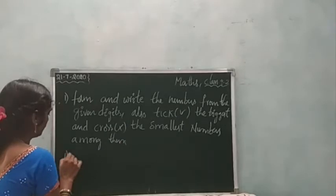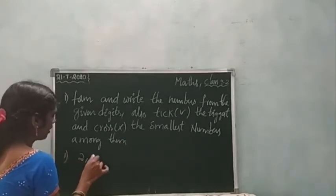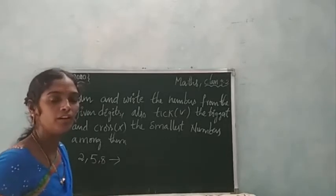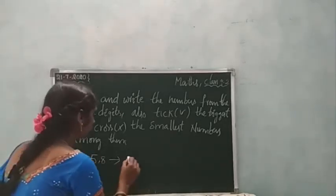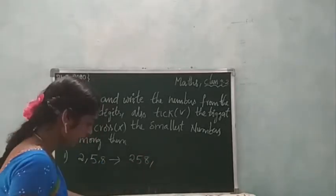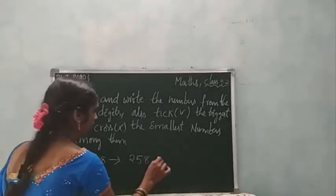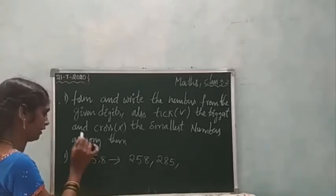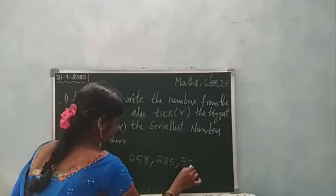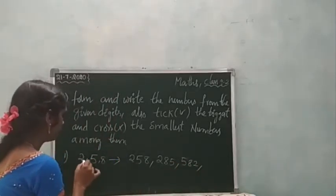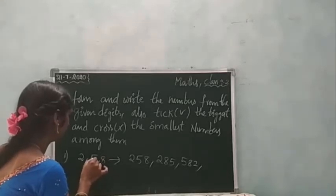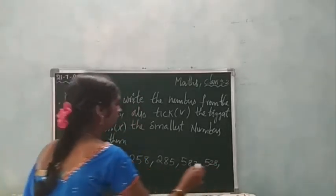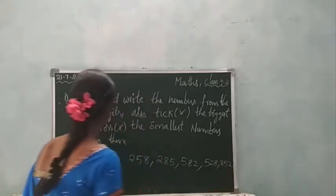Okay children, I will give you an example. 2, 5, 8 — this is 2, 5, 8. These numbers we can arrange in so many ways. Because 2, 5, 8 gives one arrangement, and 2, 8, 5 gives another number. We can arrange so many types: 2, 5, 8 and 2, 8, 5.